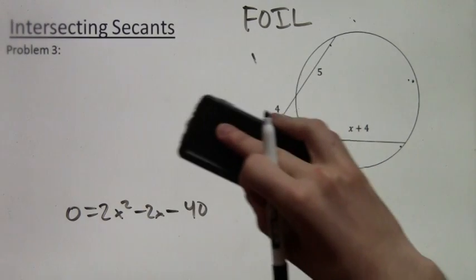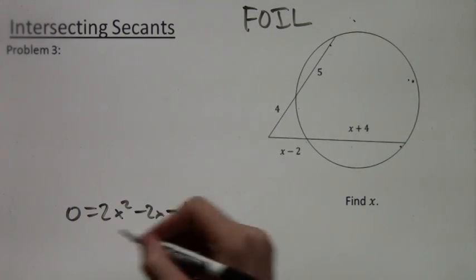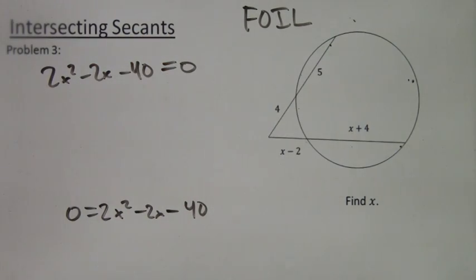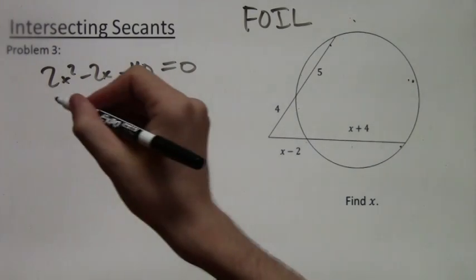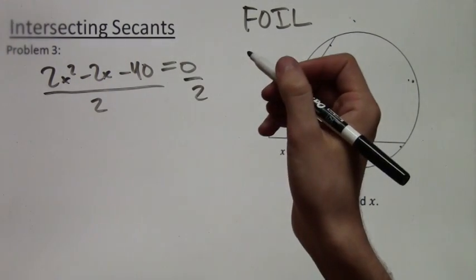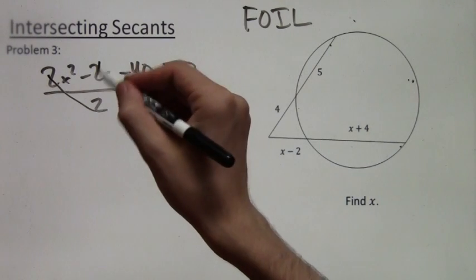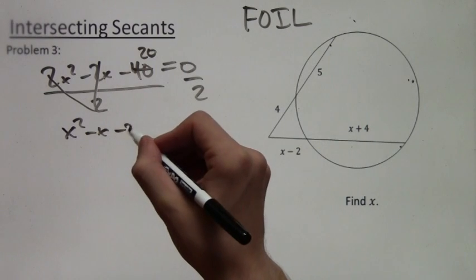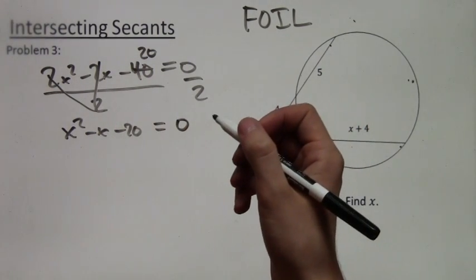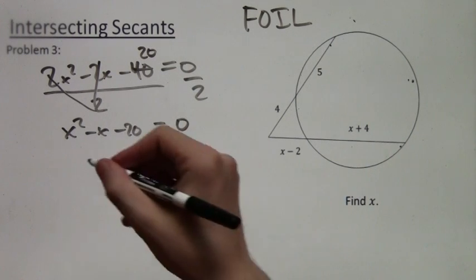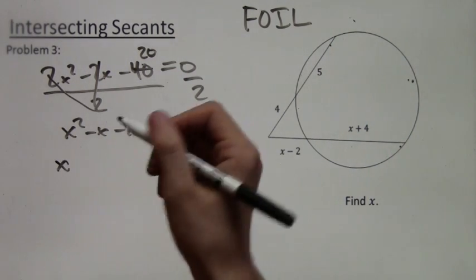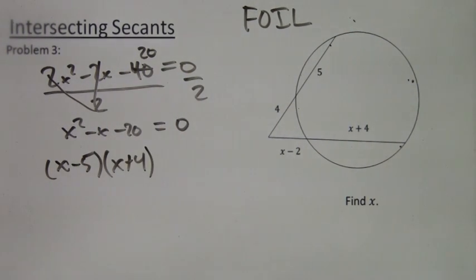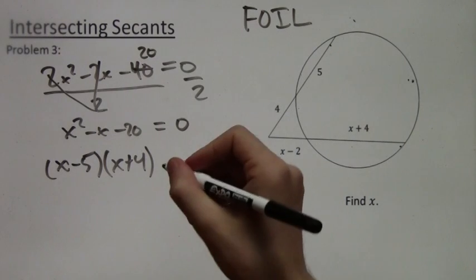Our equation is 0 equals 2x squared minus 2x minus 40. I already wrote this above because we ran out of room there. We can actually divide both sides of this equation by 2 to simplify it. So the new equation we're going to be working with is x squared minus x minus 20 equals 0. And this is what I'm going to factor. I'm not going to show all my work in factoring, just going to do it. If you need help with that, look at some other video lessons. x minus 5 times x plus 4 is what we get when we factor, and that equals 0.